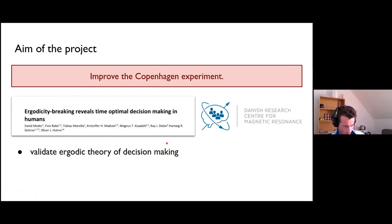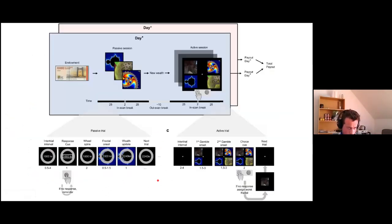It's been done in collaboration with people around the world and also fellows from the LML. The aim of the Copenhagen experiment was to validate the ergodicity theory of decision making. Now we can ask why do we even care about improving the experiment. The first reason is that we want to address the criticism that happened after the experiment, and more importantly we want to replicate the finding, the main finding of the experiment.